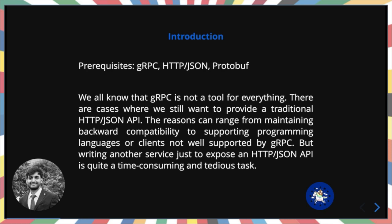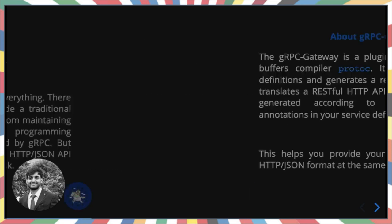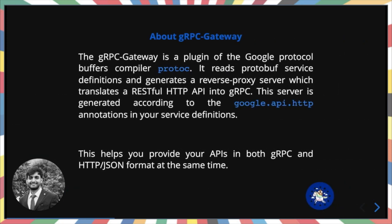But writing another service just to expose an HTTP/JSON API is quite a time-consuming and tedious task. So is there any way to code just once but provide APIs in both gRPC and HTTP/JSON at the same time? The answer is yes — we have gRPC-gateway.